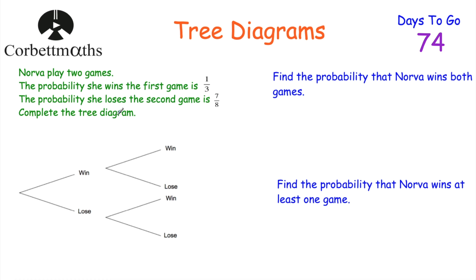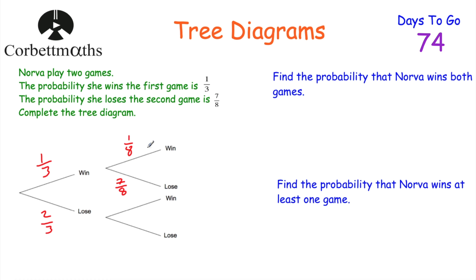To complete the tree diagram: the probability Nova wins the first game is 1/3, so the probability she loses is 2/3 (assuming each game is win or lose only). For the second game, the probability she loses is 7/8, which means the probability she wins is 1/8, since win and lose must add to 1. Both branches of the second game have win = 1/8 and lose = 7/8.